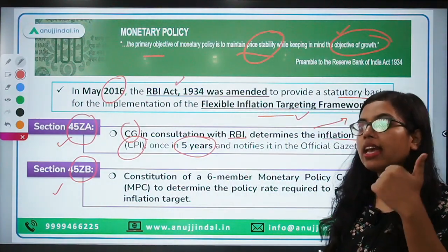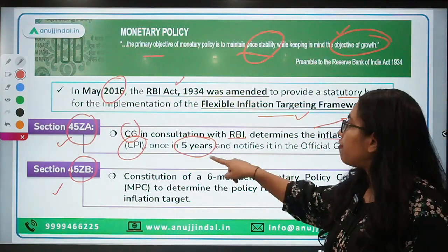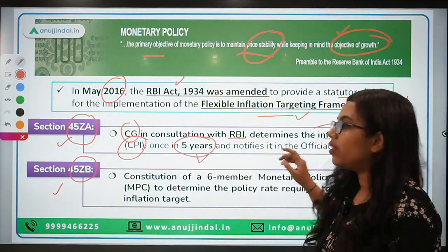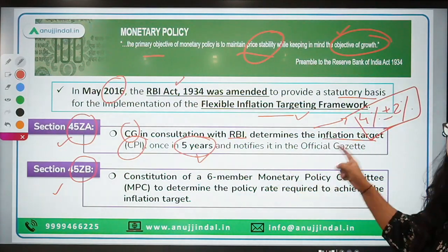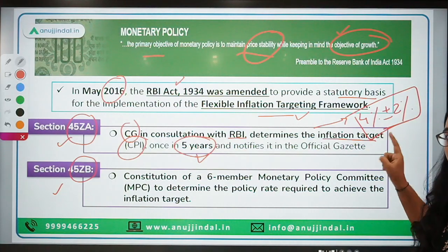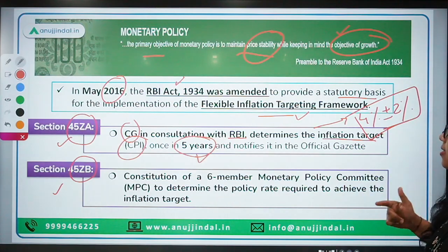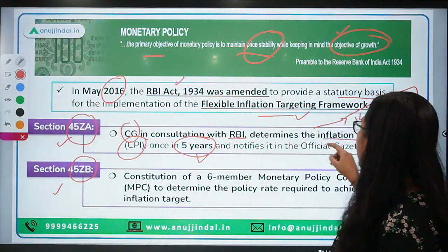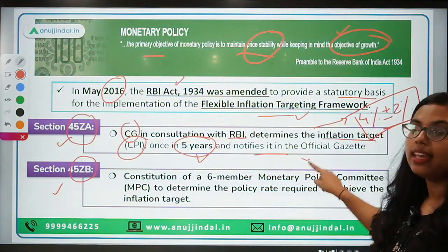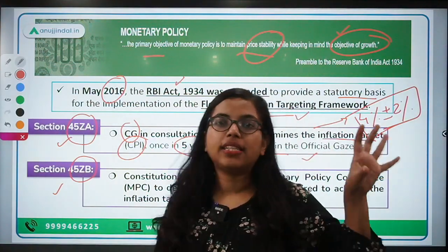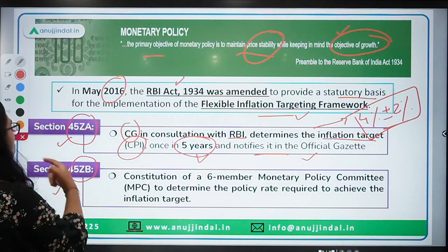These rates are changed every five years — they may remain the same or be changed, but every five years this will be reviewed. Once the inflation target is decided, the central government will notify this in the Official Gazette.